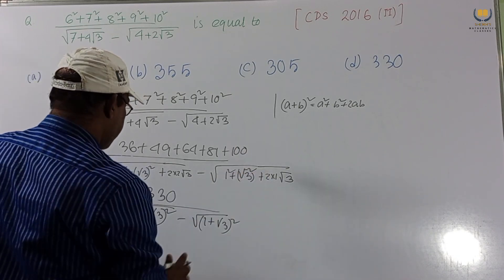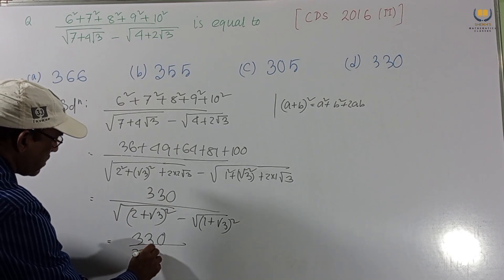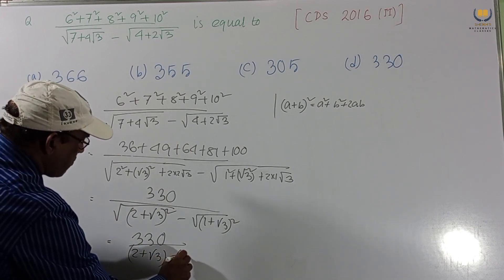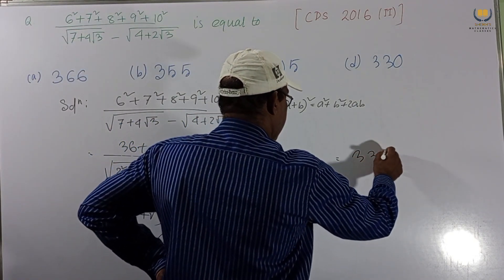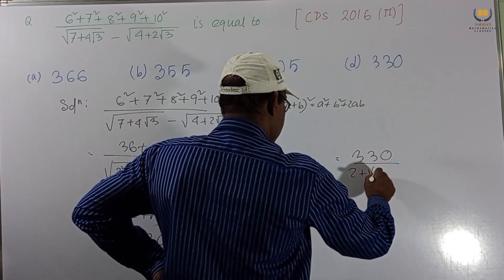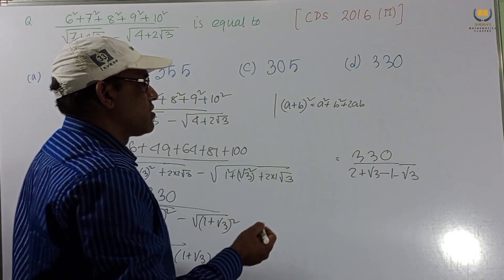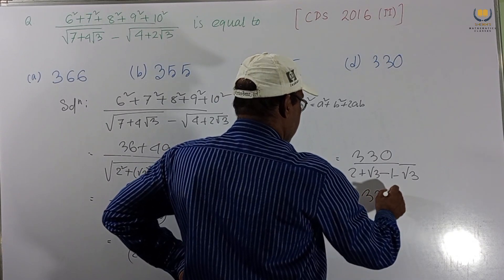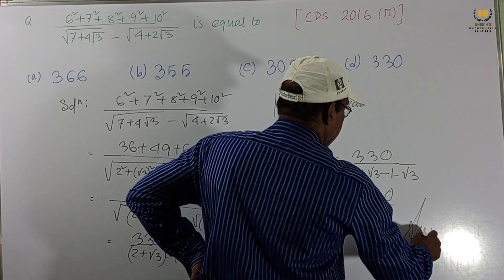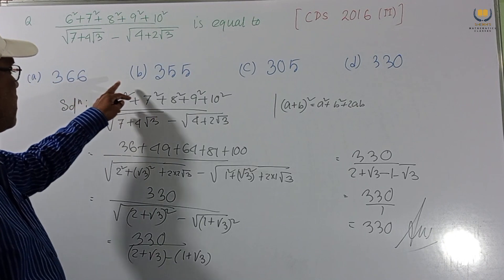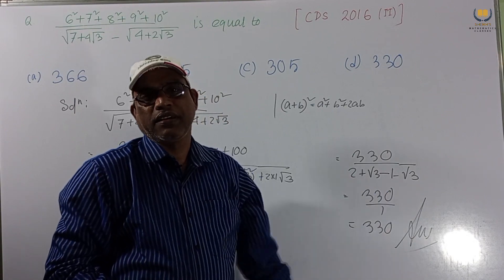So the expression becomes 330 divided by (2 + √3) − (1 + √3). Expanding the denominator: 2 + √3 − 1 − √3. The √3 terms cancel, leaving 2 − 1 = 1. So the answer is 330 ÷ 1 = 330. Option D is our answer. Very easy solution!